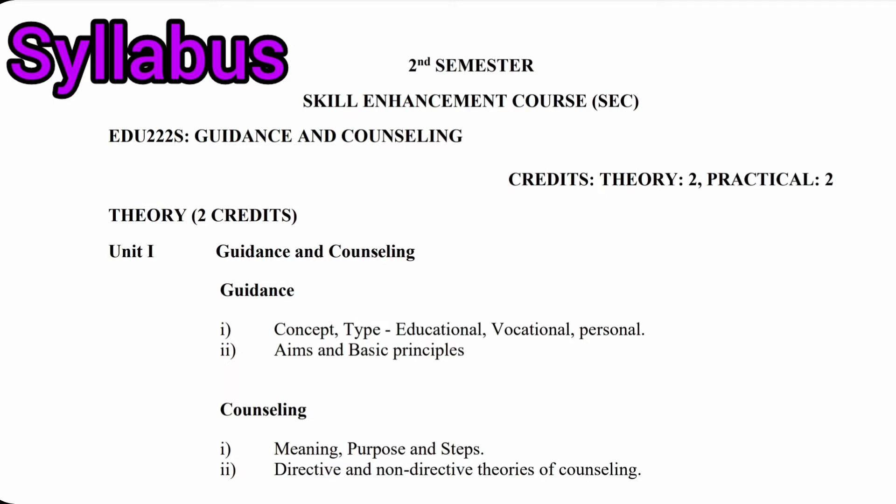Theory 2 Credits. Unit 1: Guidance and Counseling. Guidance — Number 1: Concept of Guidance. Number 2: Types of Guidance, i.e., Educational Guidance, Vocational Guidance, and Personal Guidance. Number 3: Aims of Guidance and Basic Principles of Guidance.